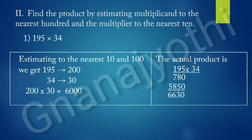Now, find the product by estimating Multiplicand to the nearest 100 and Multiplier to the nearest 10: 195 into 34. If we estimate to the nearest 10 and 100, we get 195 is estimated to 200, 34 is estimated to 30. So, 200 into 30 is 6,000.